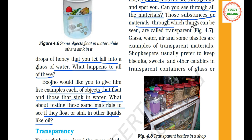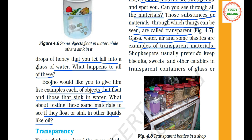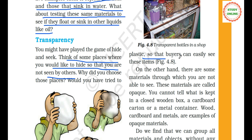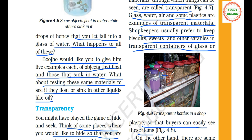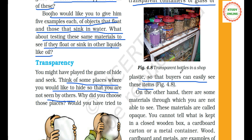Those substances or materials through which things can be seen are called transparent. Glass, water, air and some plastics are examples of transparent materials. Shopkeepers usually prefer to keep biscuits, sweets and other eatables in transparent containers of glass or plastic so that buyers can easily see these items and make a purchase.